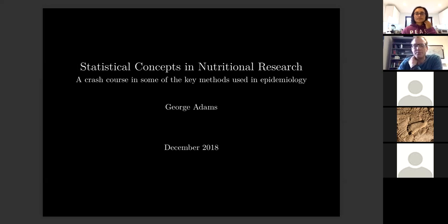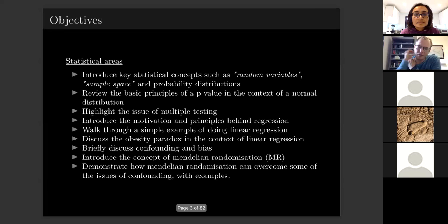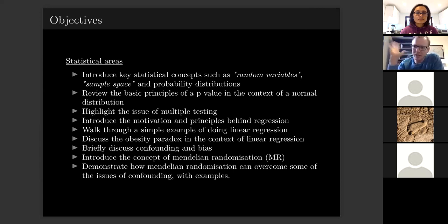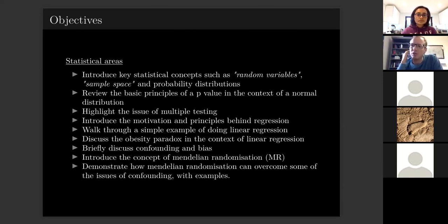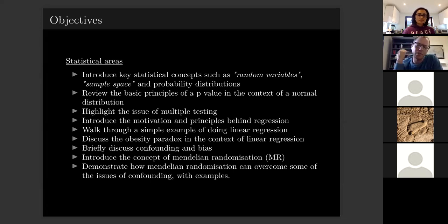I've kept this quite simplistic, but I'm happy to go into further detail. There are three areas I want to cover: the effects of multiple testing and p-values, because the failure to adjust for multiple testing is the most common error I see when reading papers; an introduction to regression using simple examples; and then confounding and bias.